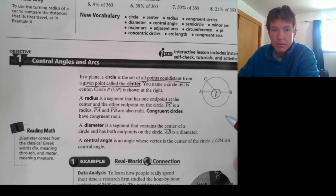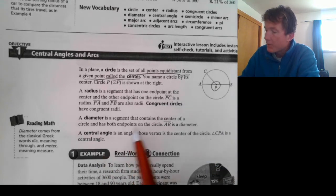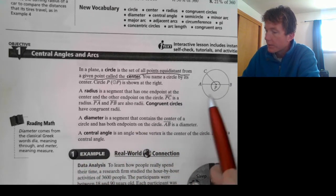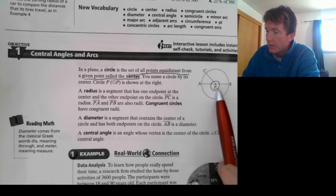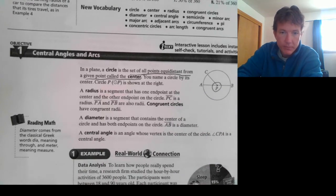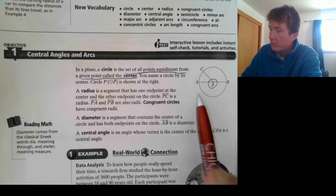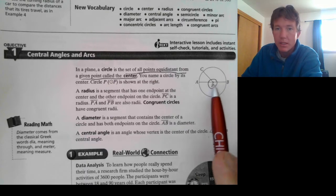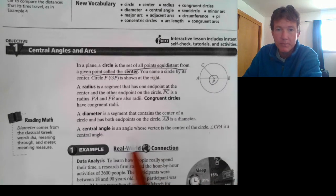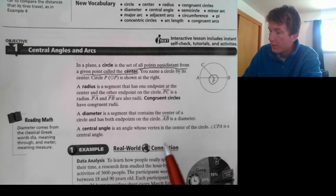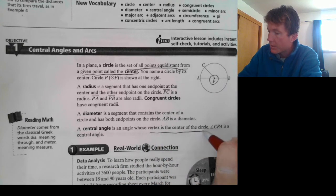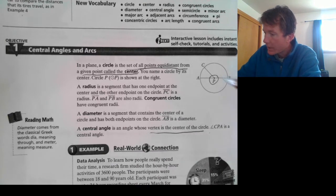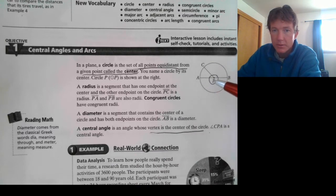Congruent circles will have congruent radii. A diameter is a segment that contains the center of a circle and has both endpoints. So, AB would be that diameter. It stretches from this endpoint A to the endpoint B, containing the center P. And then, a central angle is an angle whose vertex is the center of the circle. Angle CPA is a central angle. So, P being the center of that angle, its vertex is at the center of the circle.